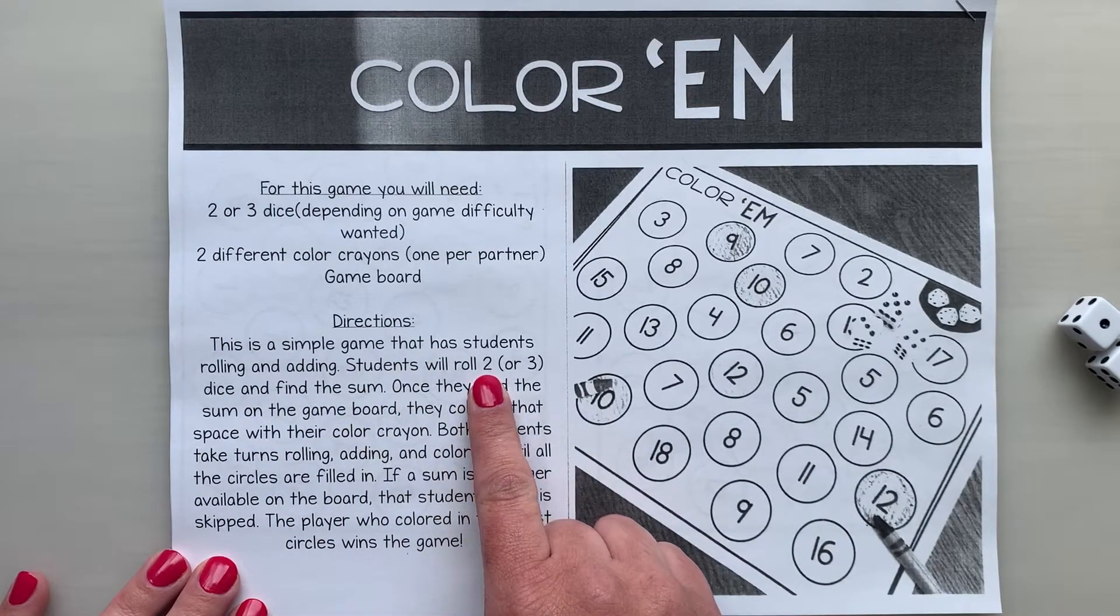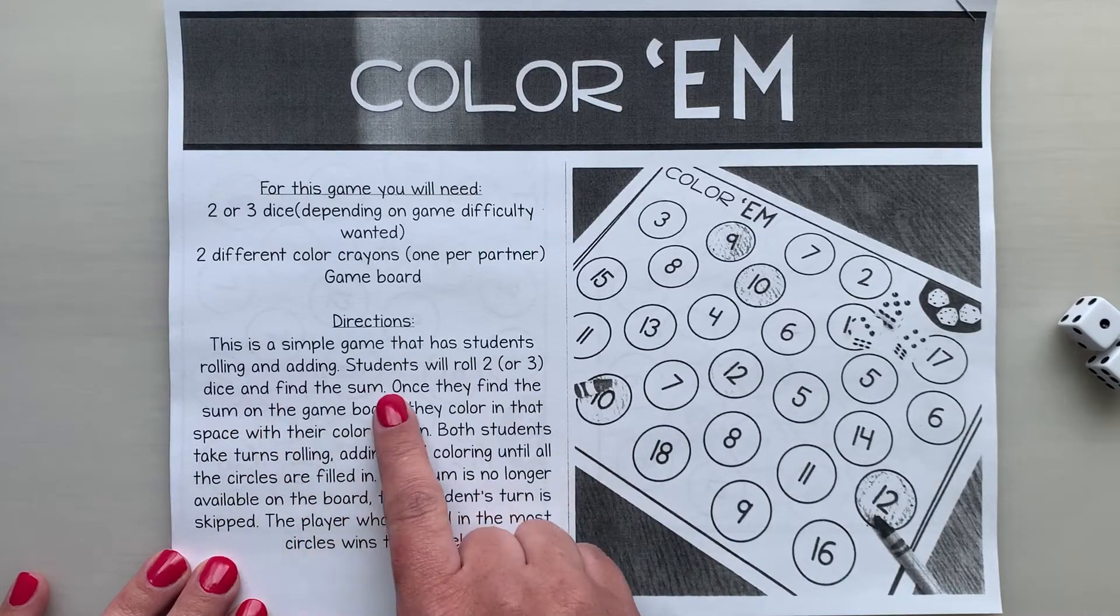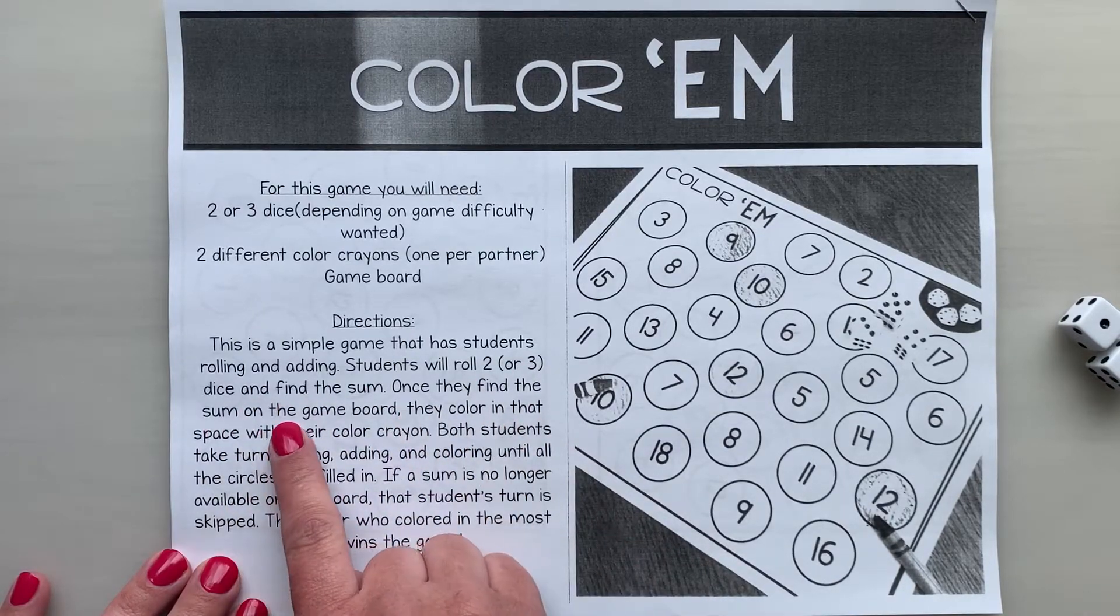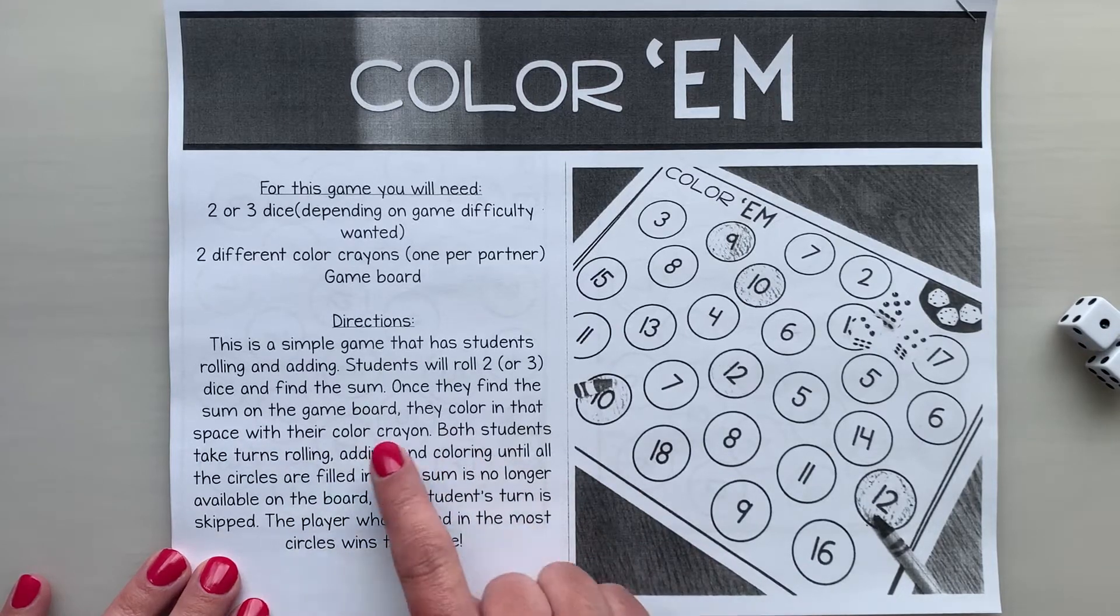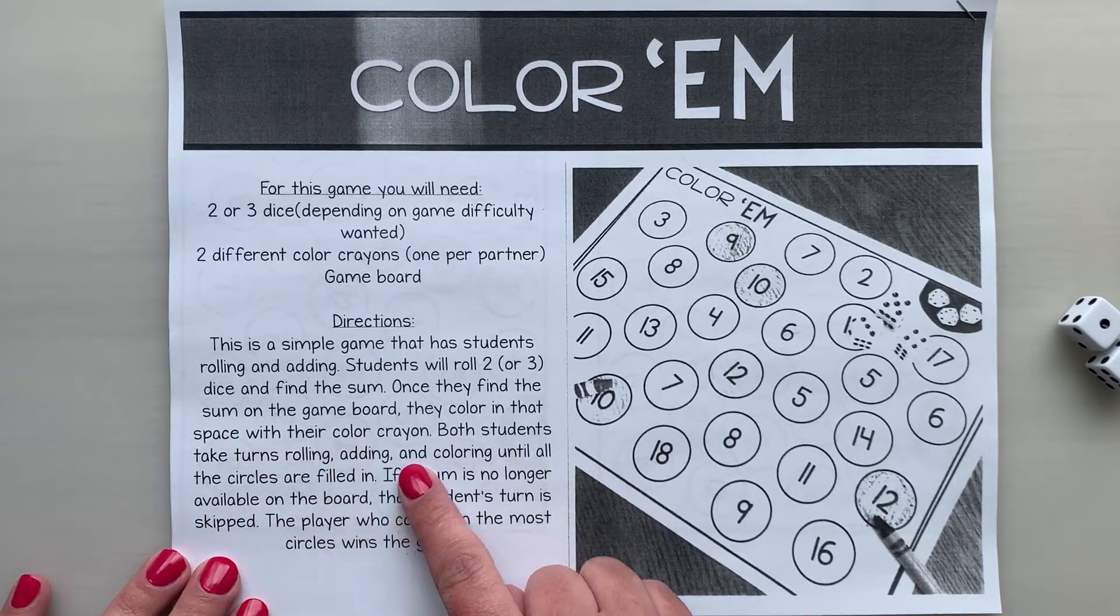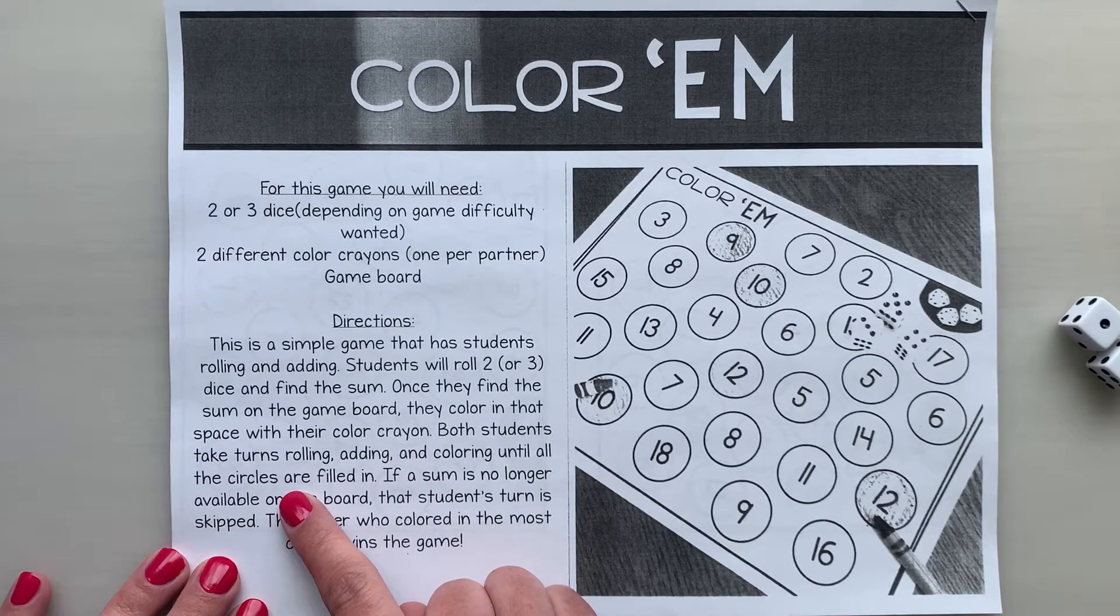Students will roll two or three dice to find the sum. Once they find the sum on the game board they color in that space with their color crayon. Both students take turns rolling, adding, and coloring until all of the circles are filled in.